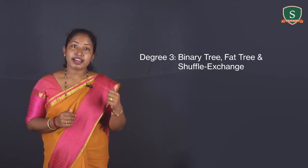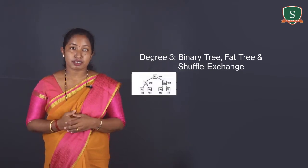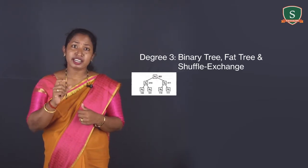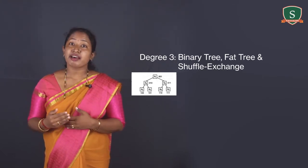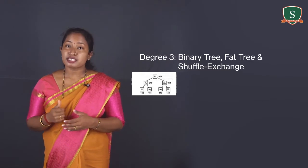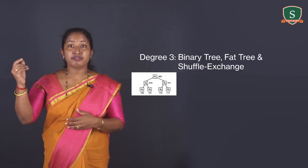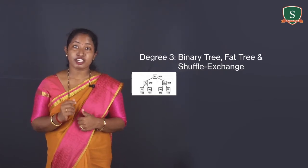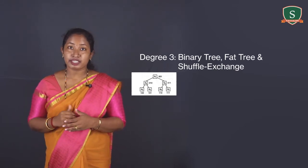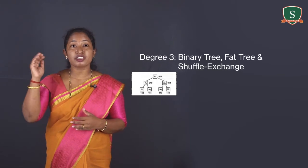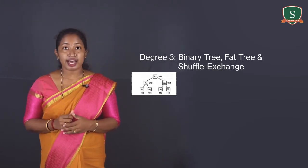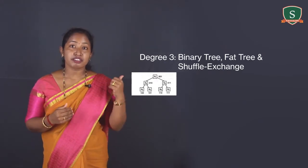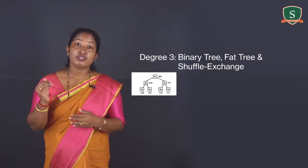Degree 3: Binary tree, fat tree, and shuffle exchange are examples. In a tree network, there is only one path between any two nodes. The binary tree has the advantage of being expandable and having a simple implementation. However, it can cause long communication delays between far-away leaf nodes, as leaf nodes farthest from each other must pass their messages through the root. One problem with the binary tree is heavy traffic towards the root node. The root node acts as a single connection point between the left and right subtrees, so all messages have to pass through it.